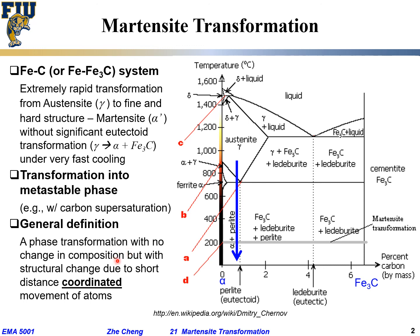The general definition of martensite transformation is a solid-state transformation with no change in composition — going from one structure to the same composition but with a sudden change in crystal structure — due to short-distance coordinated movement of atoms. Since there is no composition change, no long-range diffusion is needed. The atoms move in a highly coordinated manner, like soldiers marching, shifting from one crystal pattern to another in a very short period of time.